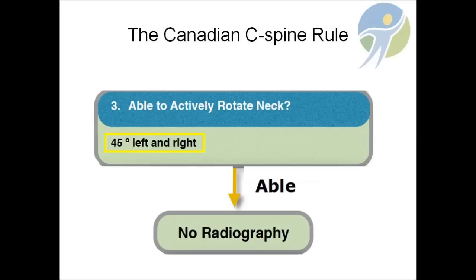Since the patient is able to demonstrate rotation past 45 degrees bilaterally, application of the C-Spine Rule has determined that an x-ray to rule out significant injury is not necessary and you can proceed with your physical examination.